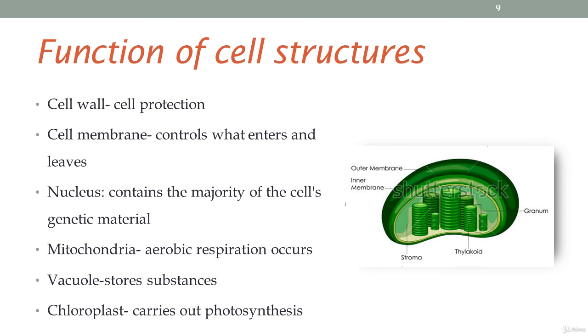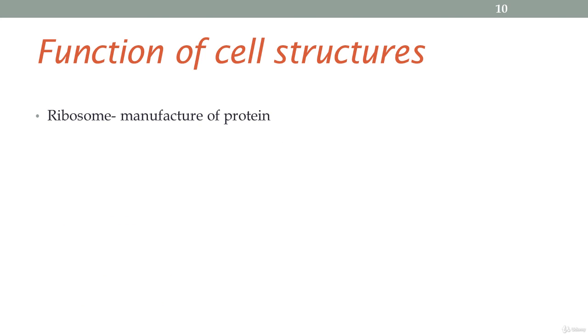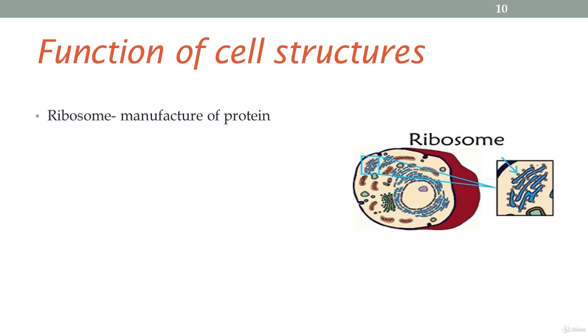Chloroplast: the main function of the chloroplast is to trap solar energy, or to trap sunlight, and carry out photosynthesis. Ribosomes: the main function of ribosomes is to assist in the manufacture of proteins.